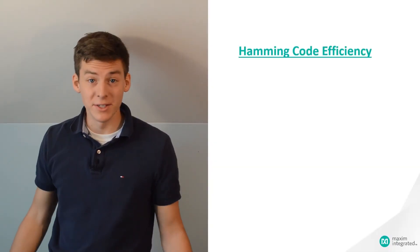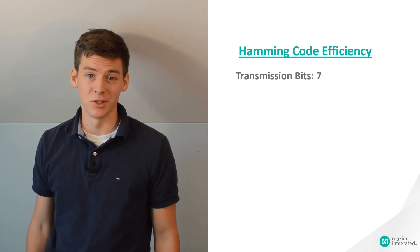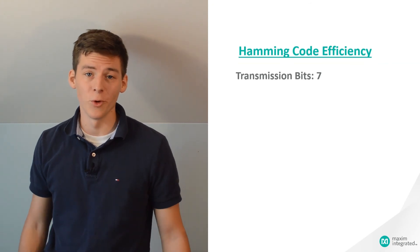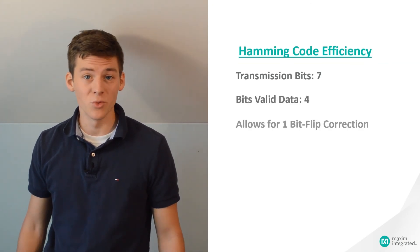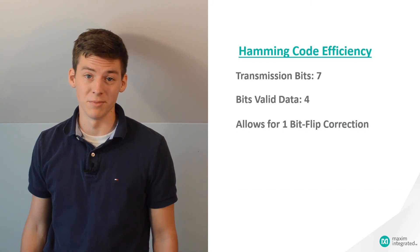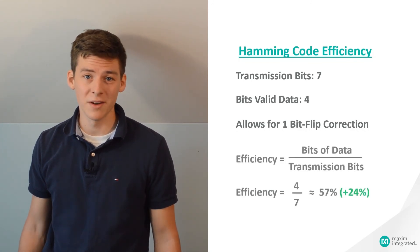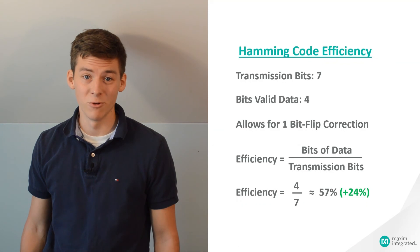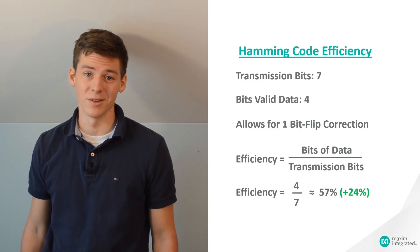By using the Hamming code scheme we see that for every seven transmission bits we get four bits of valid data and we can still fix up to one transmission bit flip. That gives us an efficiency of 4 over 7, or about 57%, which is a 24% increase from the repetition code.